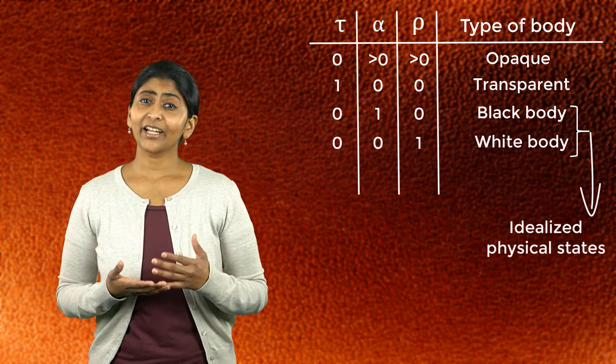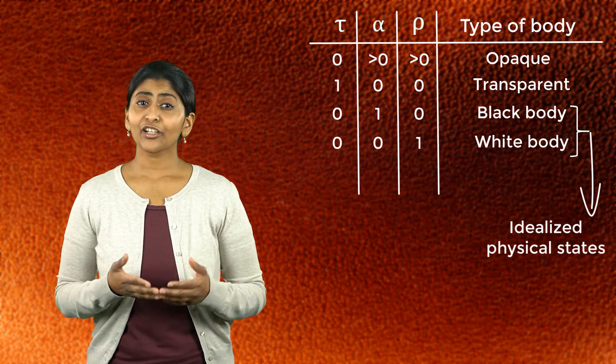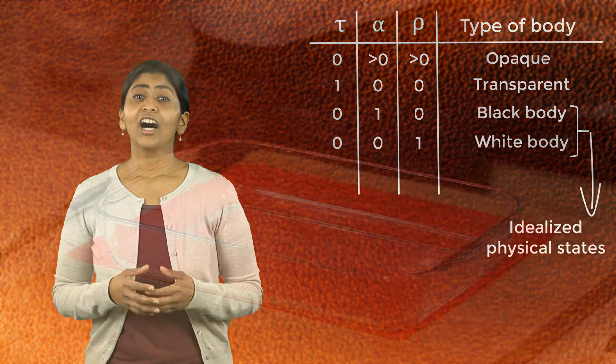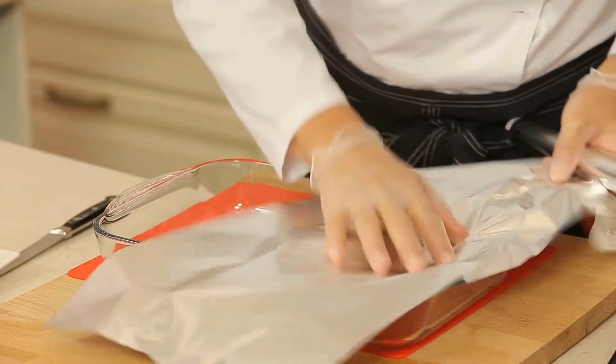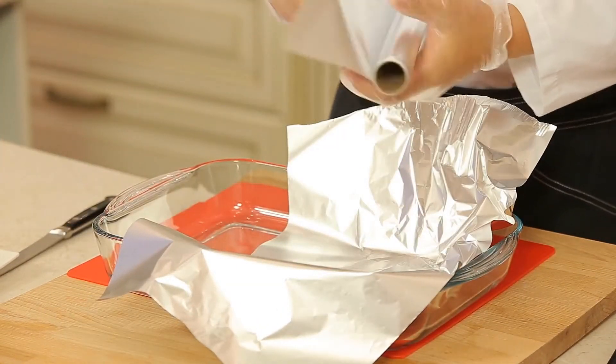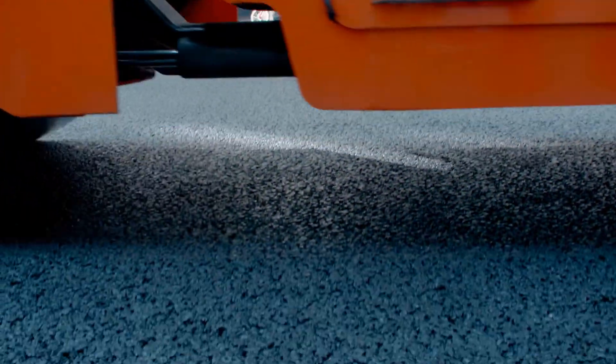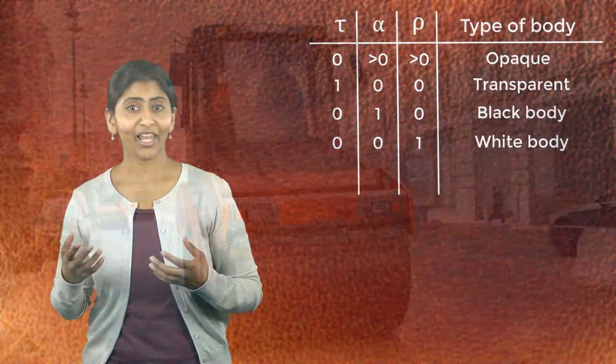But mirror-like metallic surfaces reflect radiation well and are closer to a white body. For example, aluminum foil reflects most of the incident radiation and hence is closer to a white body. Asphalt on the other hand absorbs most of the incident radiation and hence is closer to a black body.